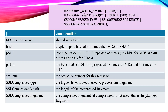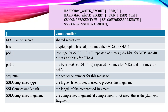Here you can see a set of algorithms that have been used. Hash MAC write secret: whatever algorithm we have been following for fragmenting, compressing, and encrypting, you can write it as — Hash(MAC write secret || pad2 || Hash(MAC write secret || pad1 || sequence number || SSL compress dot type || SSL compress dot length || SSL compress dot fragment)). The MAC code is generated over the compressed data.